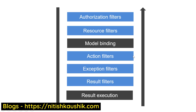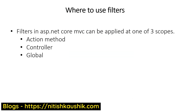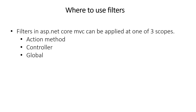Filters in ASP.NET Core MVC can be applied at one of three scopes. You can apply a filter on a single action method or a couple of action methods directly. If you apply a filter at the controller level, it will work for all action methods under that controller. If you apply a filter at the global level, it will be applicable for all action methods in your entire project. You can use filters at any of these scopes based on your requirement.